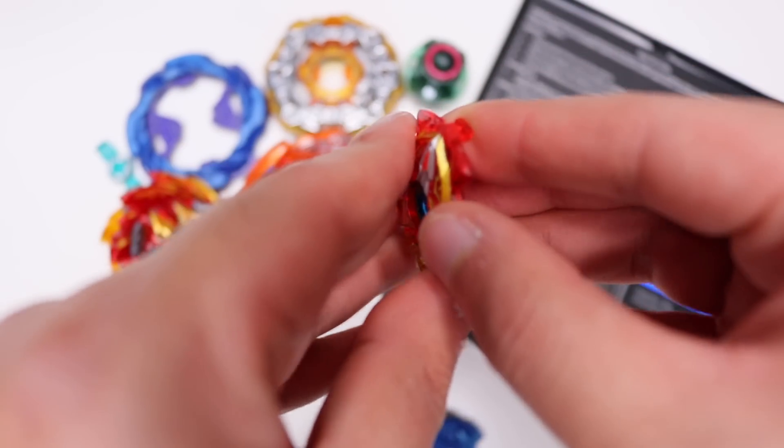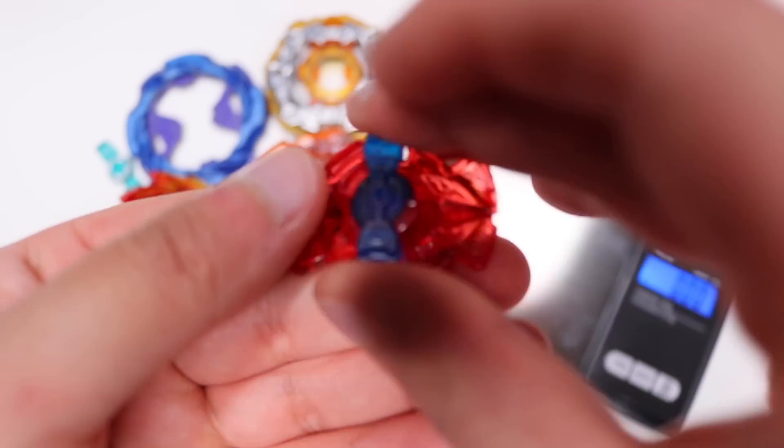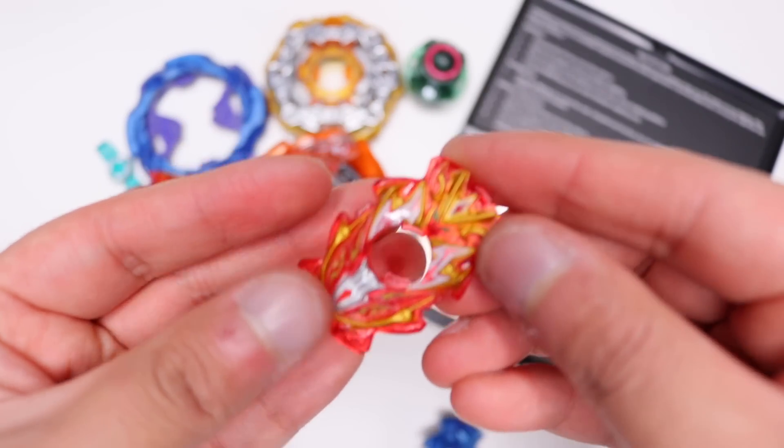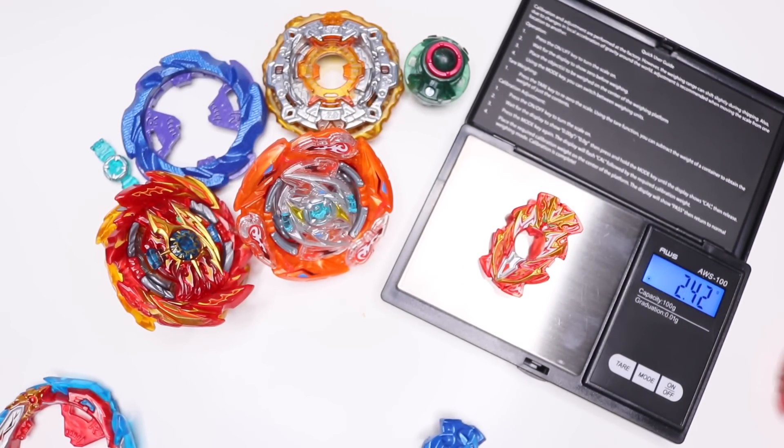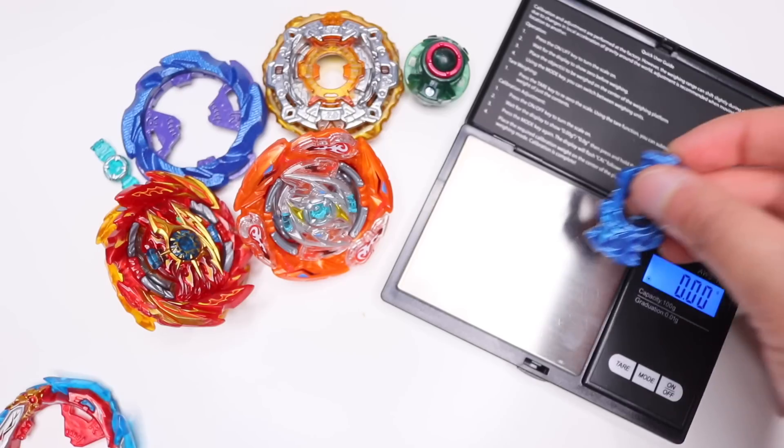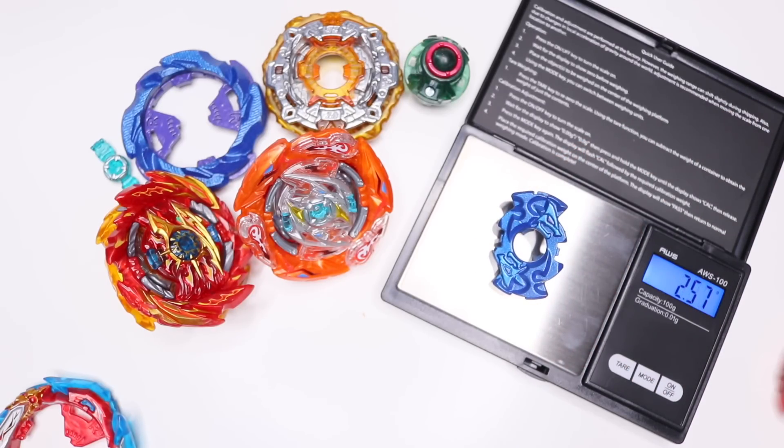If you use Orbit Metal on this combo, it will literally burst by itself. I don't know what it is exactly. Orbit Metal is just a very weird driver, so I'm sticking with Atomic. It gives good stamina, balance, and of course defense, so that is all good. The next thing I want to do is just a weight comparison with some legitimate sparking beyblades.